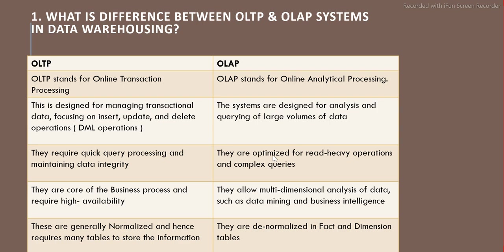OLAP is basically optimized for read-heavy operations and complex queries because we actually generate lots of reports in OLAP. OLTP systems are core business systems and require high availability. OLAP allows multi-dimensional analysis of the data. The last difference is that OLTP systems are generally normalized and hence require many tables to store the data, whereas OLAP systems are basically denormalized with fact and dimension tables.